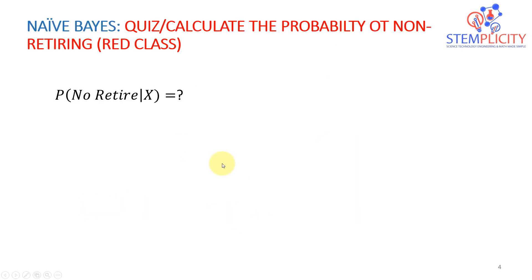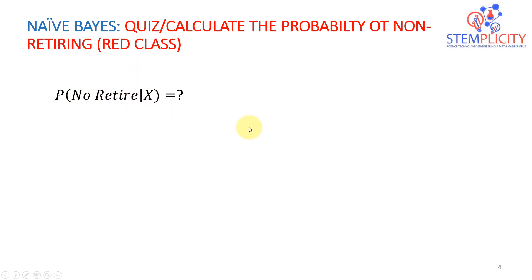Now it's time for a quick mini challenge. Please go ahead and calculate the probability of not retiring given X. We have the same equation, but now we're going to apply it for the red class instead of the blue class. Please pause the video and give it a try.